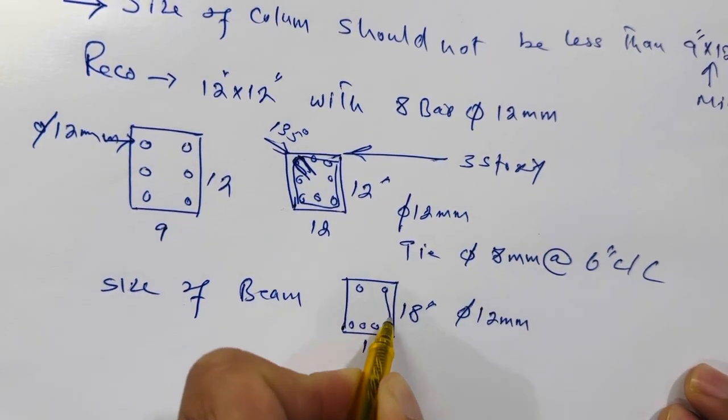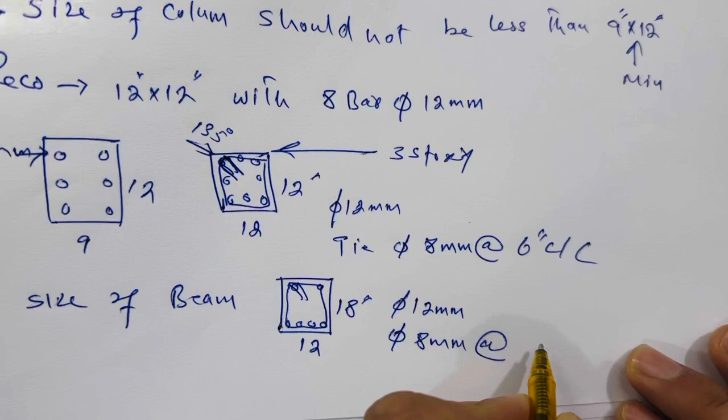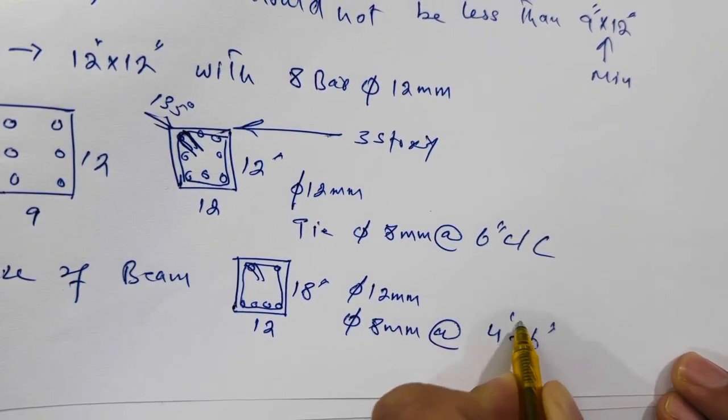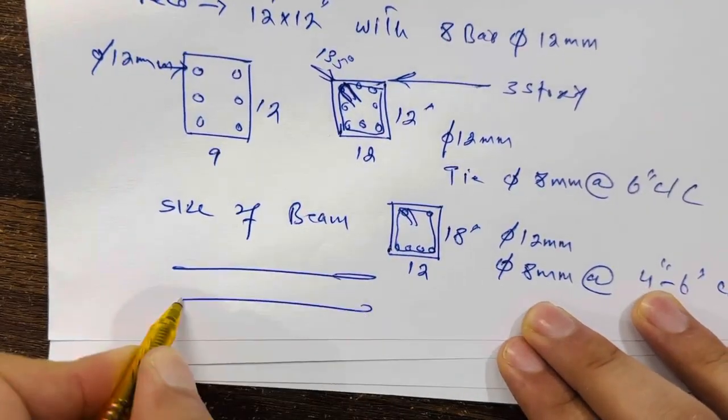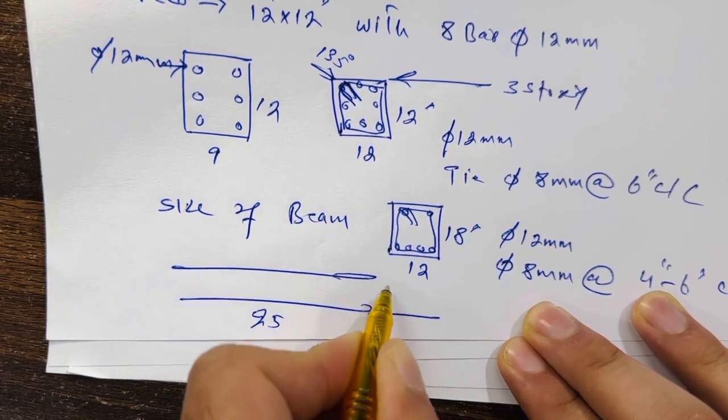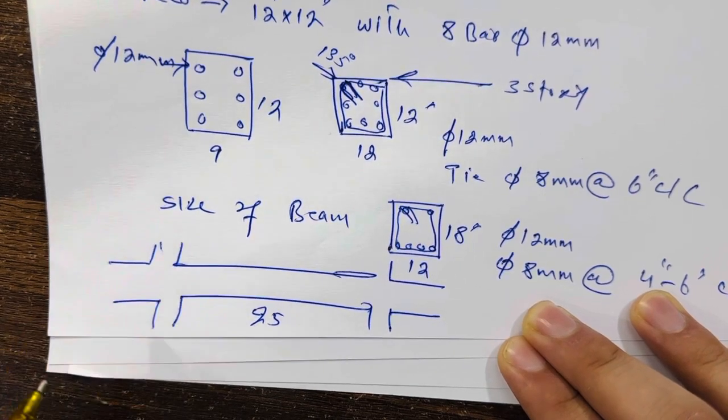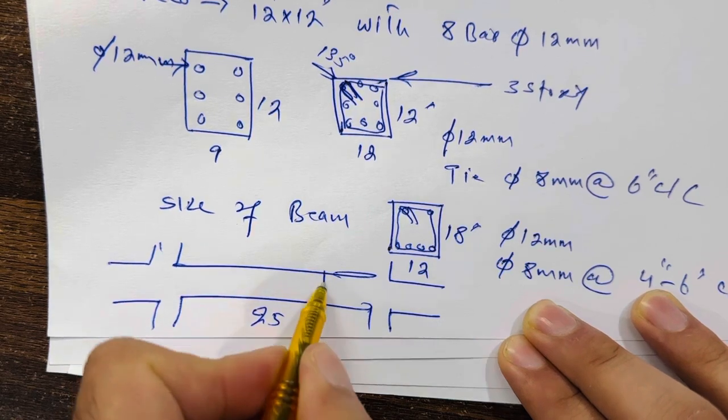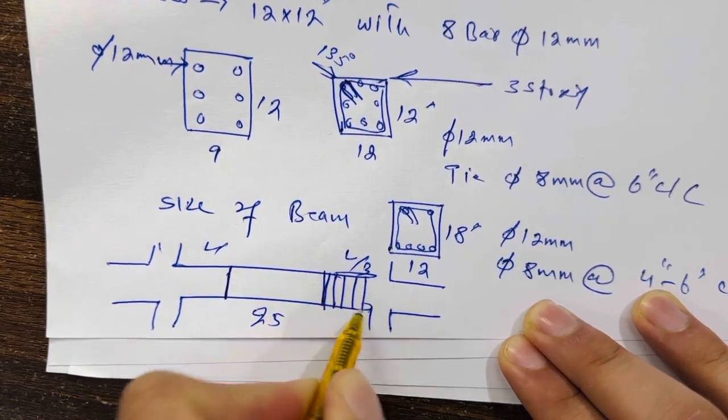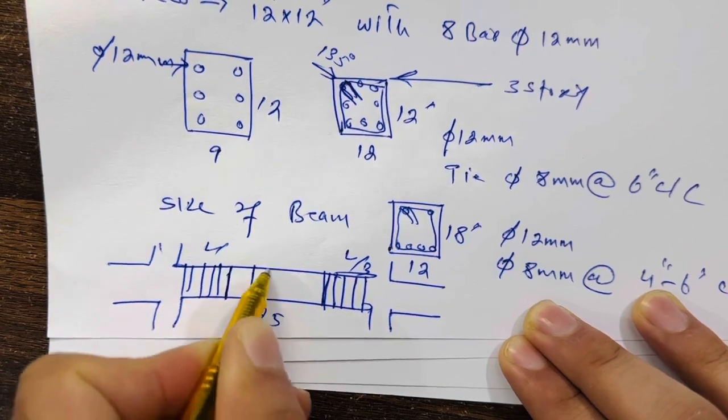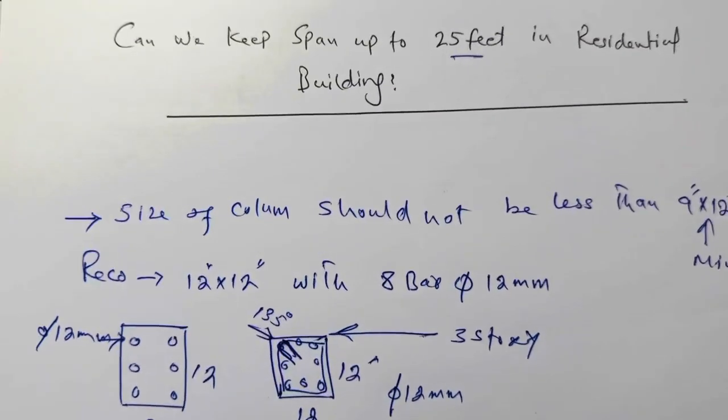Next, you can see the stirrups. So the diameter should be 8 millimeter with the spacing of 4 to 6 inches center to center. How 4 to 6 inches? Let me make its long section. This is long section. The span is 25 feet. This is one column you can see here, this is other column. So use here the spacing up to L by 3 distance - L by 3, also L by 3. So keep the spacing 4 inches here, and you can increase after L by 3 to 6 inches. So here 6 inches and here 4 inches center to center. So this is very important to know about steel reinforcement.